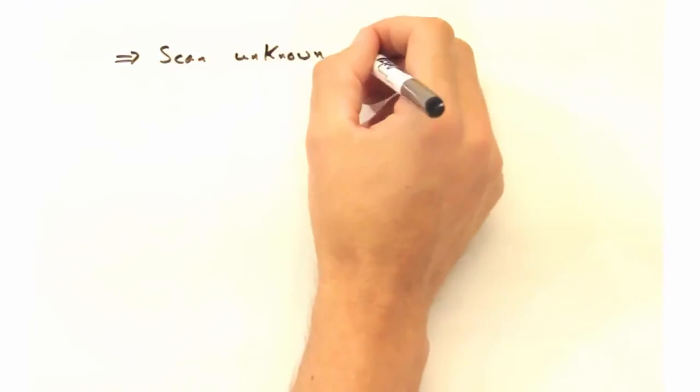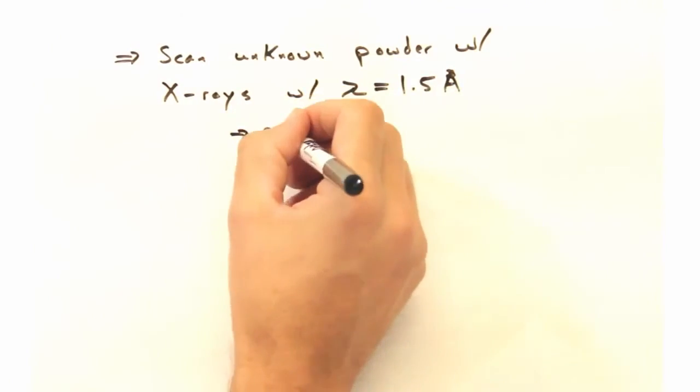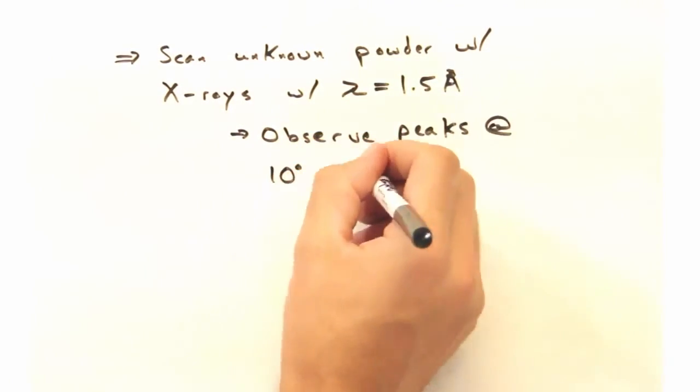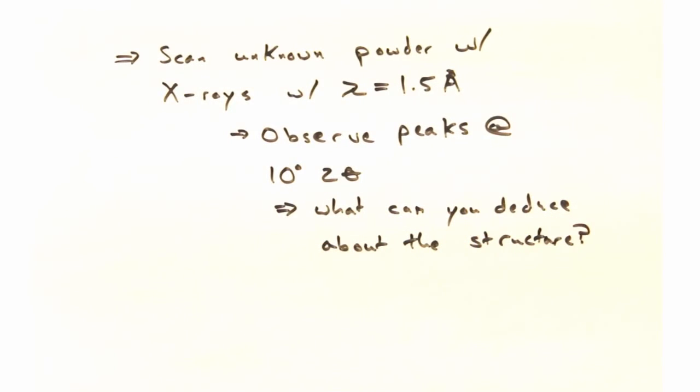Let's consider scanning an unknown powder with x-rays of wavelength 1.5 angstroms. What can you deduce about the material if you saw peaks down at 10 degrees 2-theta?